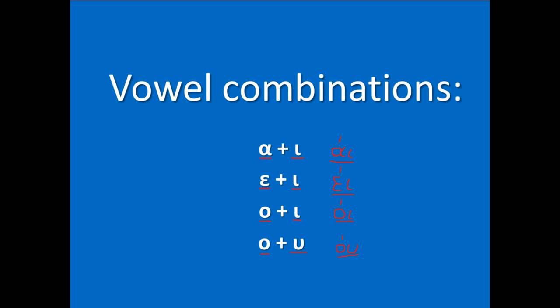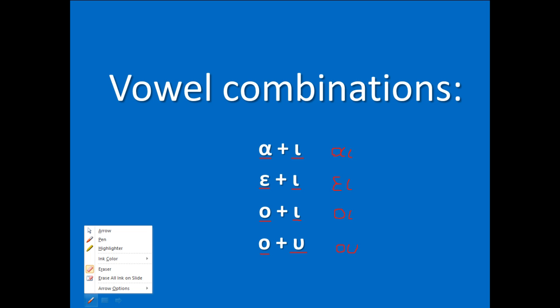But if we put the tonos at the second letter each time, or if we don't put a tonos at all, we pronounce them correspondingly as E, E, E, E, E, and OU.